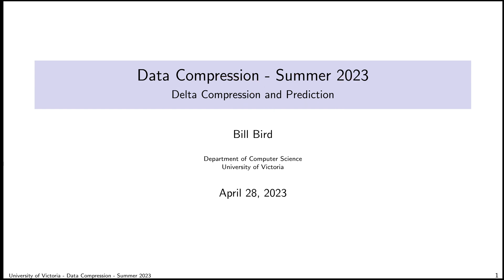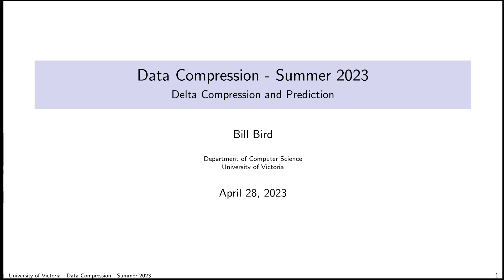As we learn more about compression schemes, these two concepts are going to come up again and again. In particular, in late June, we're going to spend a lot of time talking about different mechanisms for prediction — something we're going to see for the very first time today. But although the lecture covers these two concepts, I think the overarching conceptual material of this lecture is about context.